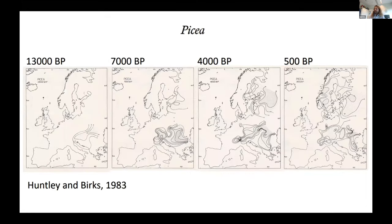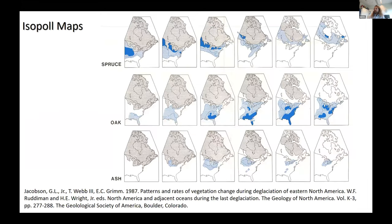In North America, these isopollen maps are found in the book on the geology of North America, and here we see that Eric's involvement was also present in 1987.